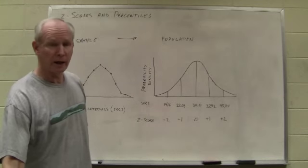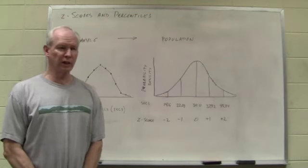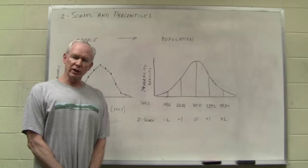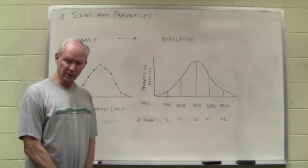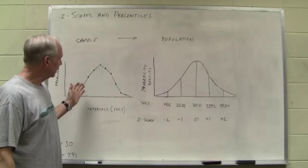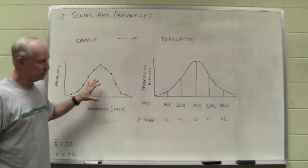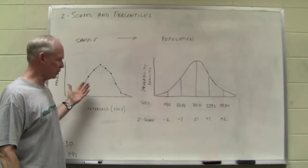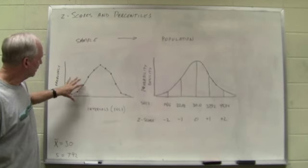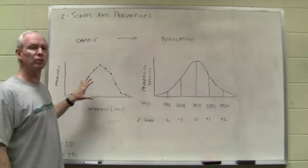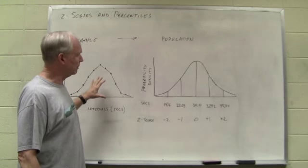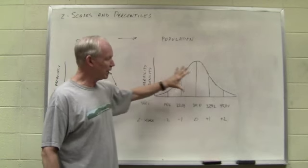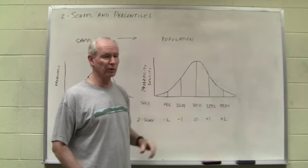In this module, we're going to talk about how to use z-scores to get to percentiles. This really only makes sense if you can make the reasonable assumption that your sample, which I've illustrated here with a polygon, and I'm assuming that there might be something like 60 scores in this sample, but this polygon we've plotted looks relatively normal, and so it might very well be reasonable to assume that these numbers were drawn from a population that is, in fact, a normal distribution.